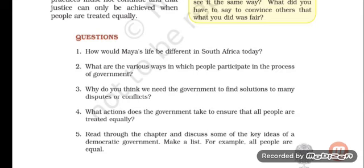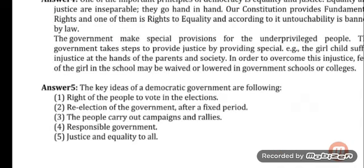Question number 6: Read through the chapter and discuss some of the key ideas of a democratic government. Make a list — for example, all people are equal. The answer is, the key ideas of a democratic government are the following.